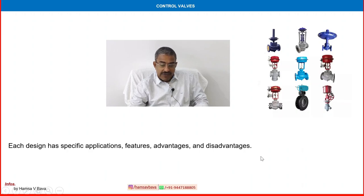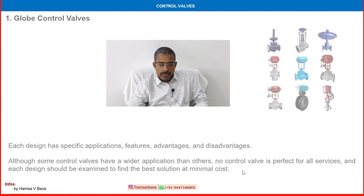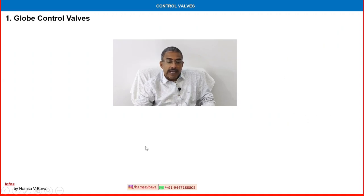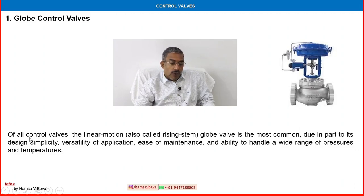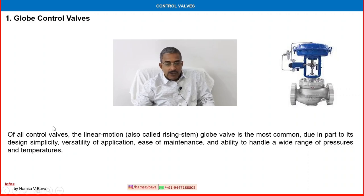Each design has a specific application, features, advantages, and disadvantages. Although some control valves have a wider application than others, no control valve is perfect for all services, and each design should be examined to find the best solution at minimal cost. We are going to concentrate on globe type control valves. Of all control valves, the linear motion — linear motion means moving up and down, whereas rotating motion means moving horizontally — globe valve comes under the category of linear motion.